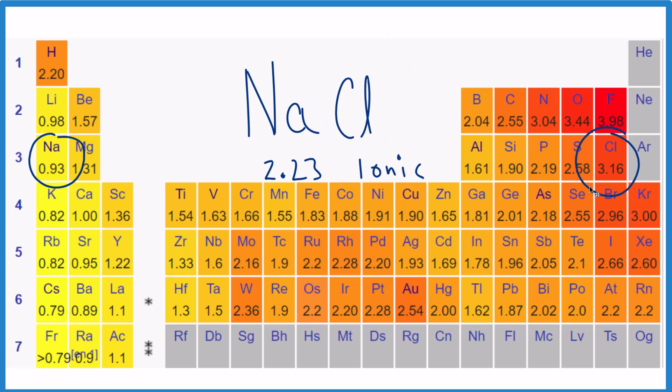And that's because our difference in electronegativity between Na and Cl is greater than 2. Some books will say greater than 1.7. But either way, chlorine, because it's closer to fluorine here, we know that it's going to have a higher electronegativity value than sodium.